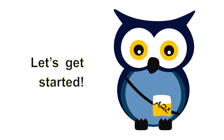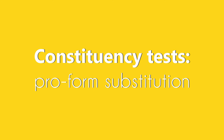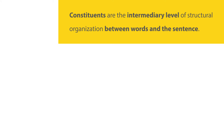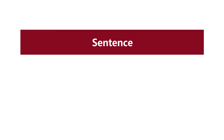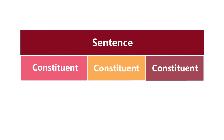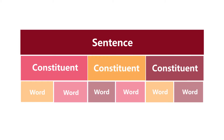Let's see what we've got today. We already talked about constituency in the sense that sentences have an internal structure below sentence level, which consists of units made up of words — an intermediary structure between word level and sentence level.